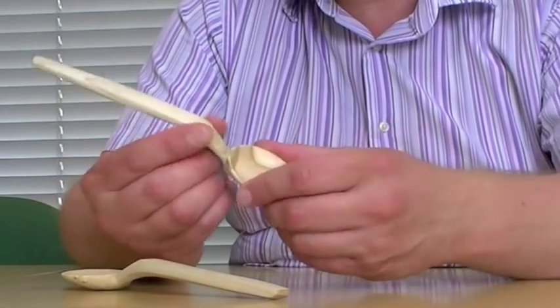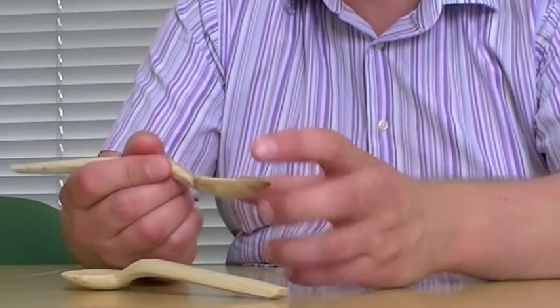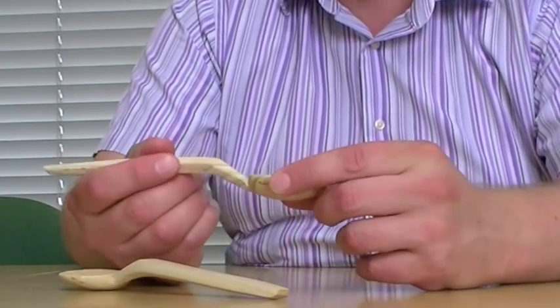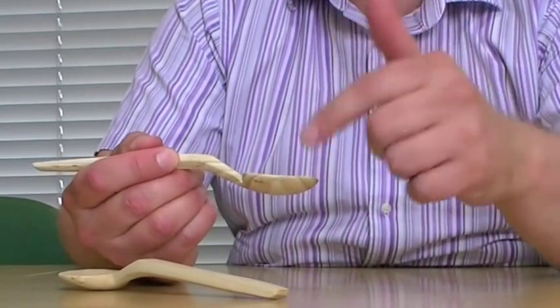Were the spoons different shapes or were they the same? Well, there were a few slightly different - the spoon itself possibly wider, narrower or deep, really deep.